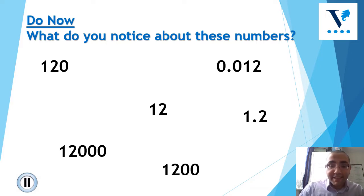So you probably notice that all of these numbers have a 12 in them. They have a 1 and a 2, but some of the numbers are maybe 10 times bigger, or 100 times bigger, or even 1,000 times bigger, whilst other numbers are 10 times smaller, 100 times smaller, or even 1,000 times smaller. That's what we're going to be looking at today.